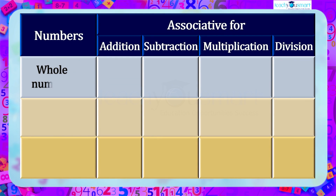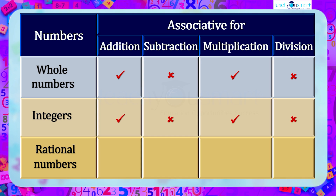Before winding up, let's summarize the associative property of whole numbers, integers, and rational numbers. Since whole numbers are not associative for subtraction and division, integers and rational numbers are also not associative for subtraction and division.